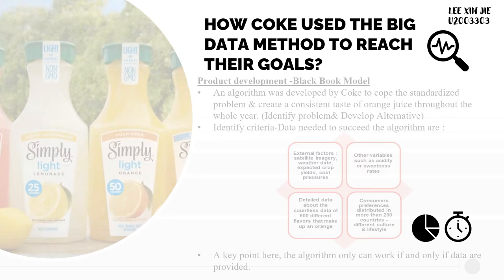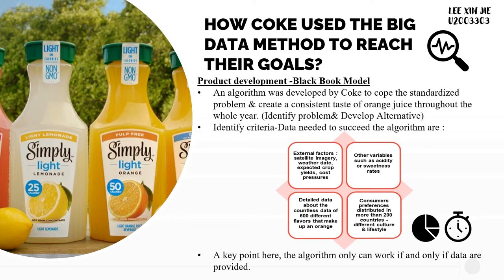How does Coca-Cola use the Big Data method to reach their goals? First, they use it on their product development, which was the production of Simply Orange Juice. An algorithm named the Black Book Model was developed by Coca-Cola to solve the standardization problem, and it is able to create a consistent taste of orange juice throughout the whole year. It actually involves steps of decision-making, which is identifying problems and developing alternatives. To succeed with this algorithm, they actually need a lot of data from external factors such as satellite imagery, weather data, expected crop yields, and cost pressure. This is because the growth of oranges will be influenced by these factors. Other than this, detailed data about 600 different flavors that make up an orange is also needed so that it can ensure every drop of orange juice produced by the model is of consistent taste. Other variables such as acidity or sweetness rates also have to be taken into consideration.